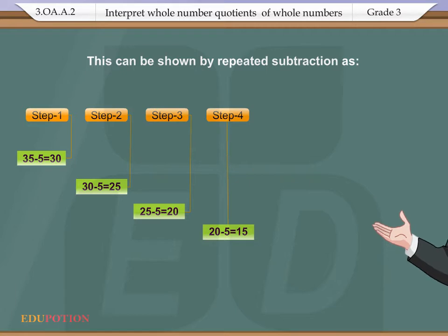20 - 5 = 15 is step 4. 15 - 5 = 10, which is step 5.